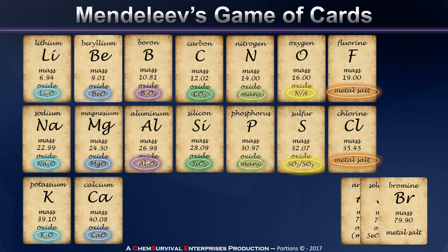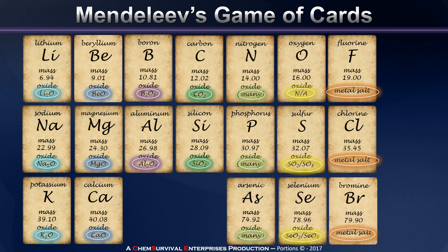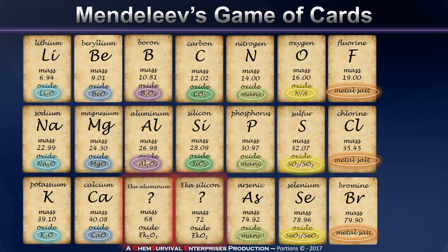But now we reach an interesting point. As Mendeleev continued his game of cards, he noticed that to get arsenic, selenium, and bromine to fit into his table, he had to leave some blank spaces. This told Mendeleev that there must be some undiscovered elements just waiting to be uncovered. And one of the most remarkable things about this story is that he proposed that these elements, known as eka-aluminum and eka-silicon, would have atomic masses of 68 and 72 and would form oxides that are 2-to-3 and 1-to-2 with oxygen respectively. And impressively, his predictions were very accurate — we now know these elements to be gallium and germanium.